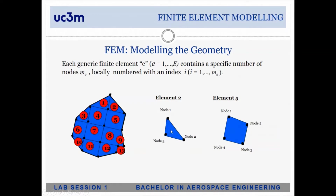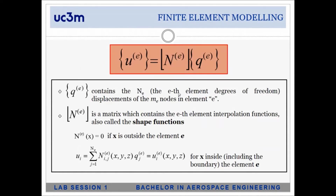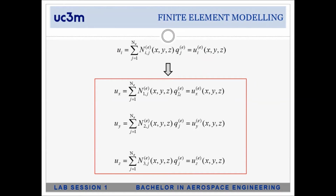For example, to find the displacement at the center of element two, we assume that displacement is related to the displacements at node one, node two, and node three, correlated through a mathematical function. These interpolation functions are also called shape functions. They are dependent on the coordinate system — on x, y, and z — and are usually either linear or quadratic functions. The displacement components in x, y, and z are expressed as a summation, because for each node we have one interpolation function.